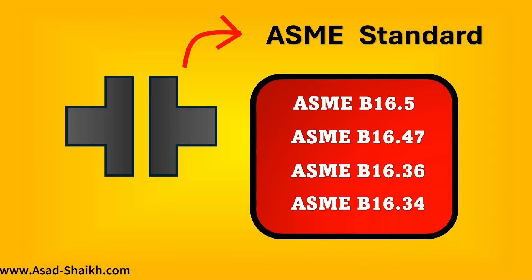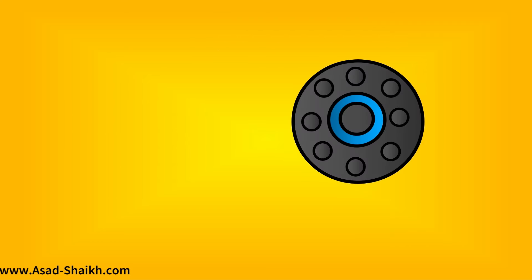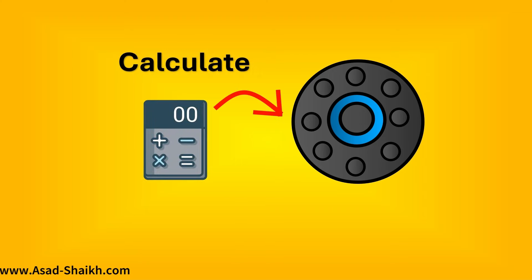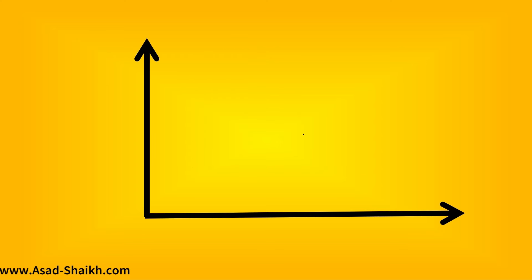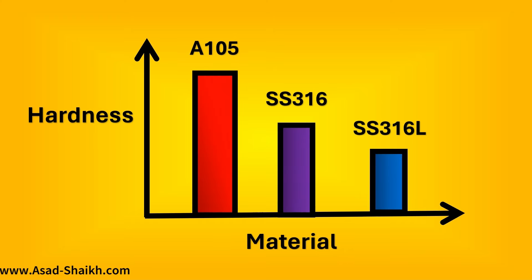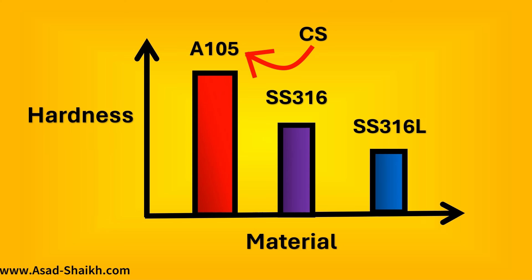The procedure to calculate the flange rating remains the same regardless of the standard. To calculate flange rating you need three important parameters. The first is the material of the flange — different materials have different hardness. For example, forged grade carbon steel has higher hardness compared to SS316.